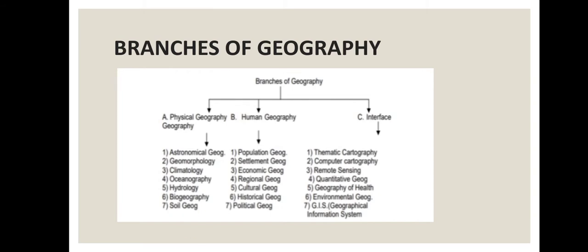The seven branches of physical geography are: astronomical geography, geomorphology, climatology, oceanography, hydrology, biogeography, and soil geography. In human geography there are: population geography, settlement, economic, regional, cultural, historical, and political geography. The seven branches of interface geography are: thematic cartography, computer cartography, remote sensing, quantitative geography, geography of health, environmental geography, and GIS — geographical information system.